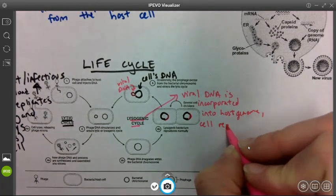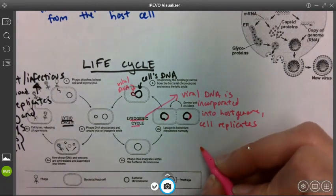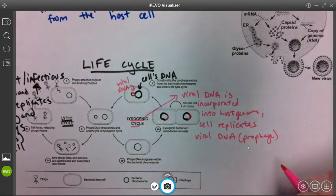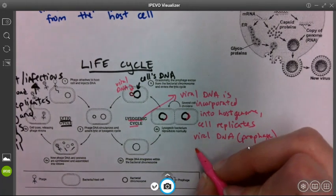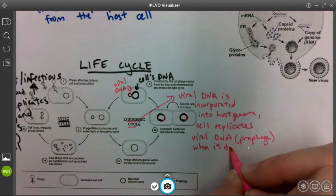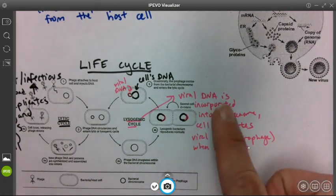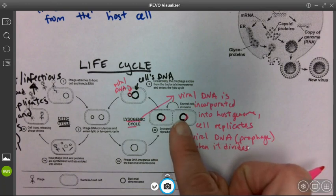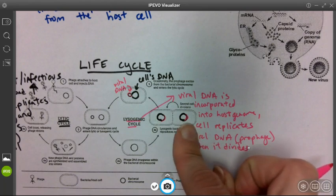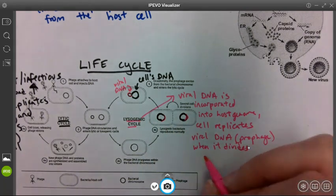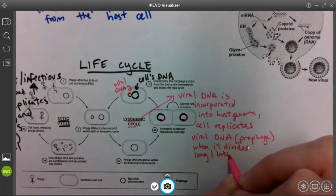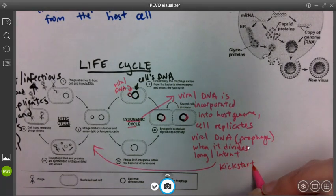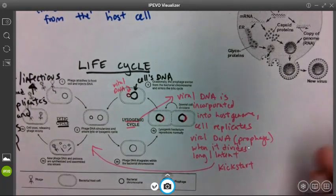So the cell replicates viral DNA. So this is a sneaky way for the virus to propagate itself by becoming part of the genome. As the cell divides, the viral DNA is replicated, and so then more virus genetic information is inside these cells. So this is often a long or latent phase that can happen, but something can kickstart the virus from this lysogenic cycle back into the lytic cycle.